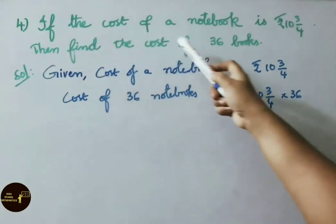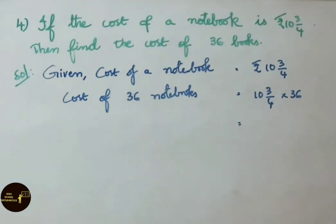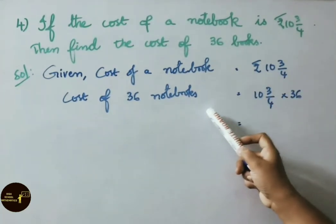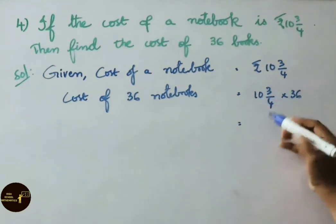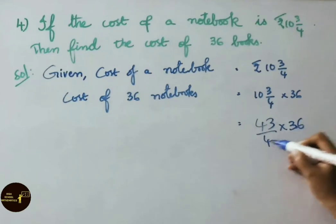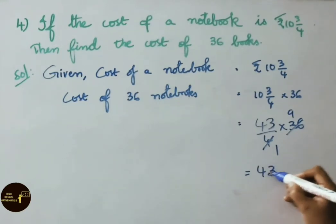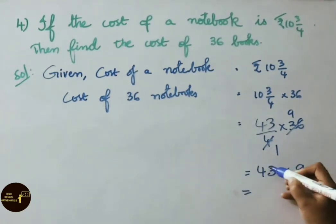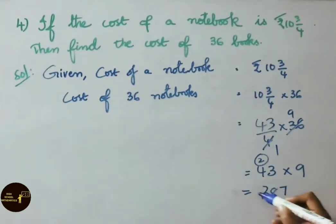Question 4: if the cost of a notebook is 10 and 3 by 4 rupees, find the cost of 36 notebooks. Cost of 36 notebooks equals 10 and 3 by 4 into 36. Converting to improper fraction: 4 tens are 40, plus 3 is 43, giving 43 by 4 into 36. Since 4 nines are 36, multiply 43 into 9: 9 threes are 27, carry 2; 9 fours are 36 plus 2 is 38. Therefore, the cost of 36 notebooks is 387 rupees.